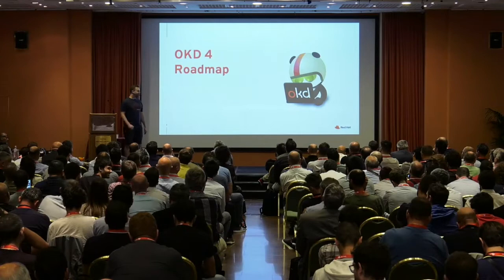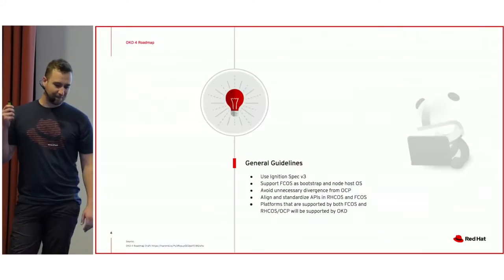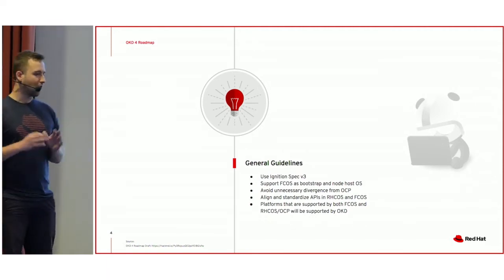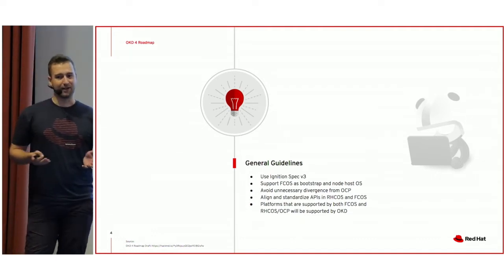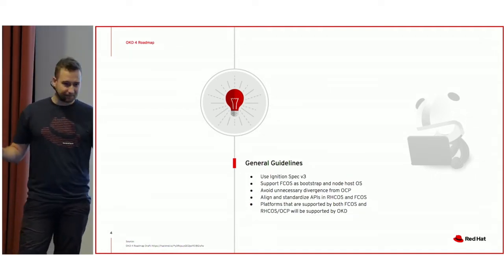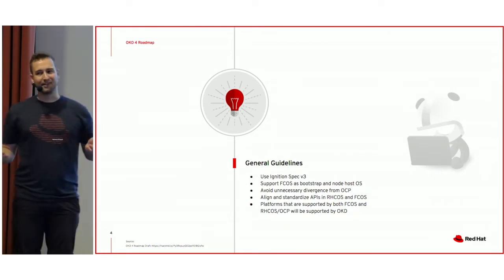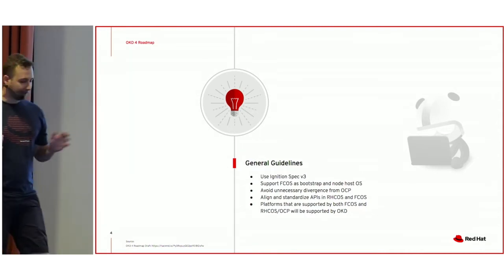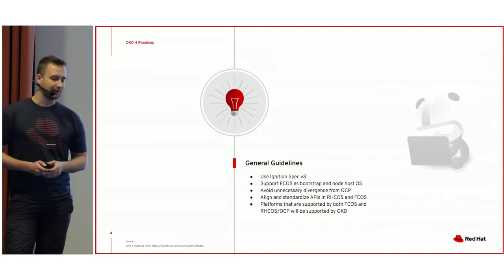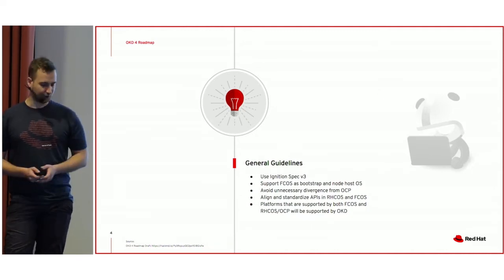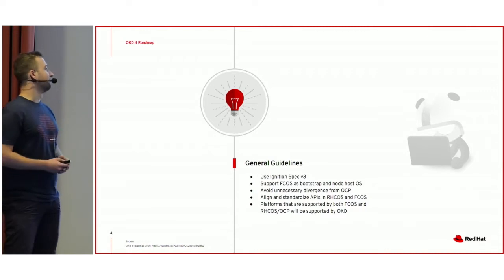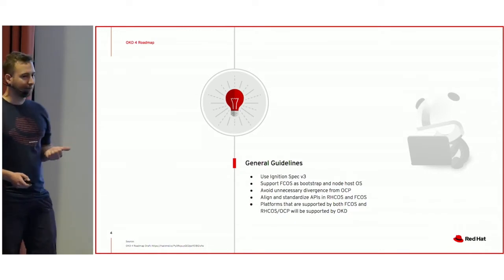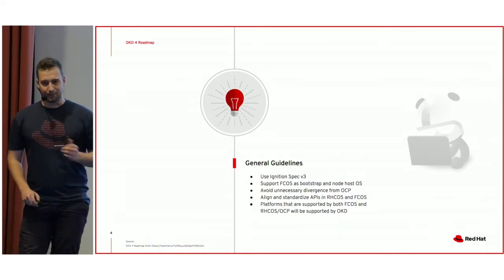So, OKD roadmap. We developed a few guidelines that would always have to be valid for OKD releases. Everything on the roadmap is still not formally agreed upon and may be subject to change, but these are the things we thought internally and also with some community members would make sense to always have to be true. So that would be: we use ignition version 3, or spec version 3, which currently OCP runs on spec 2.